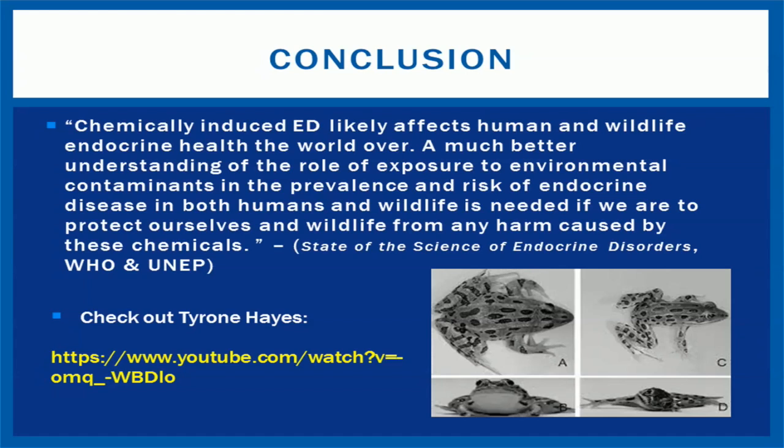For more information on the nervous system and neurotoxic chemicals, please check out the Neurotoxins in Everyday Life video by previous Books Fellow Yanwei Feng. Additionally, check out the YouTube link to watch a lecture from biologist Tyrone Hayes as he talks about his research on the herbicide atrazine and how its endocrine disrupting effects cause male frogs to develop female sex organs. Thank you for watching.